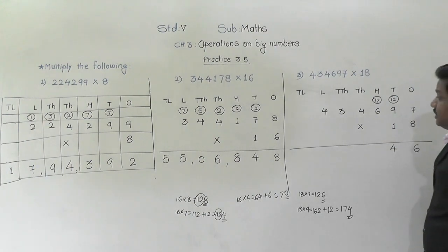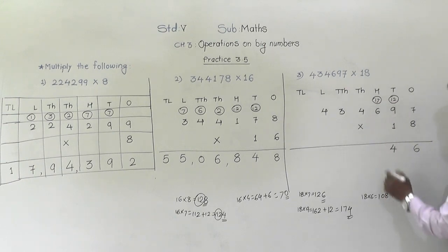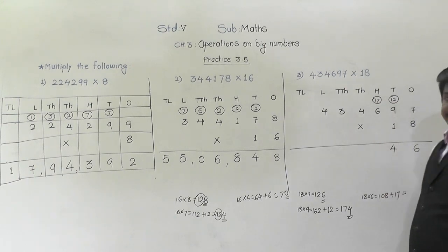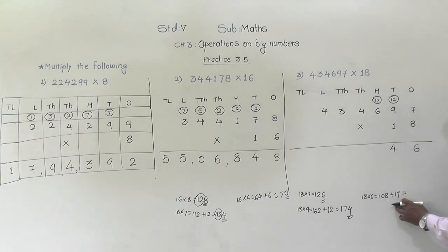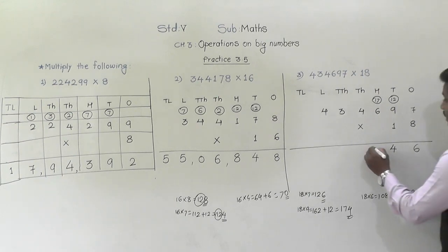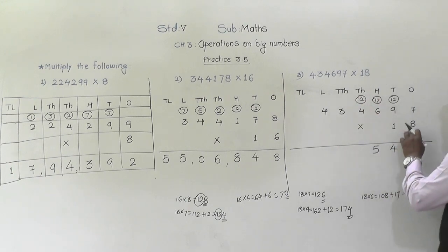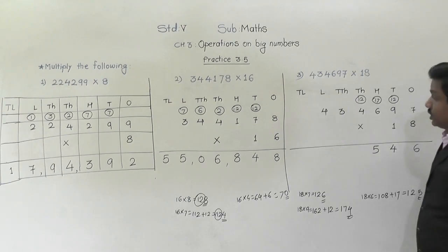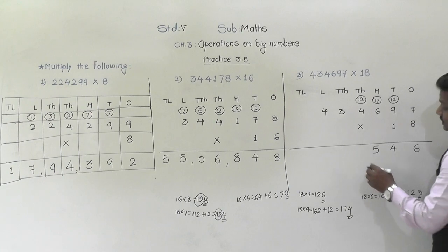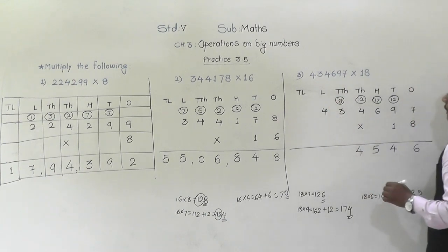18 sixes are 108 plus 17 carried is 125. So 5 will come down, 12 will be carried. Next, 18 fours are 72. 72 plus 12 is 84. So 4 will come down, 8 will be carried.